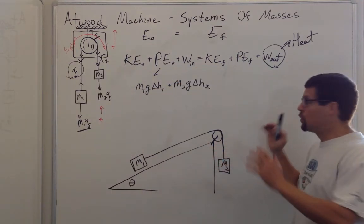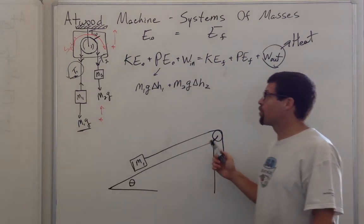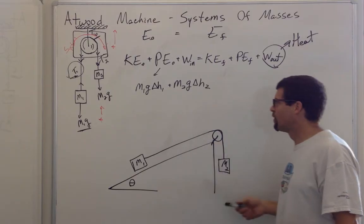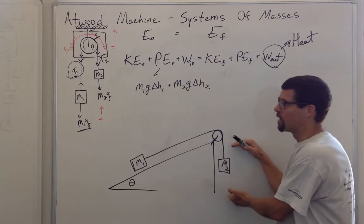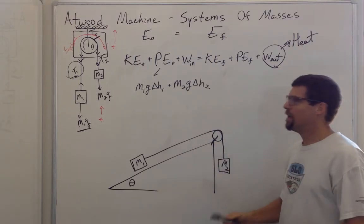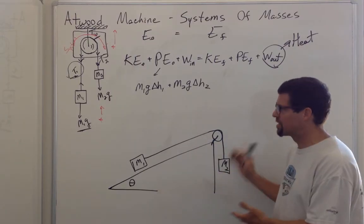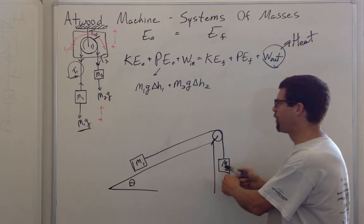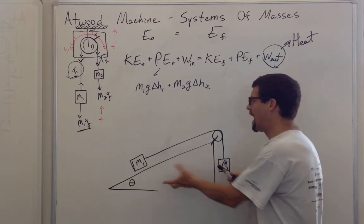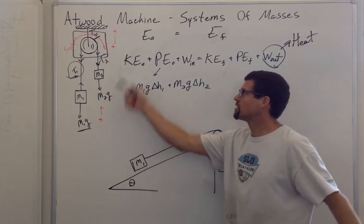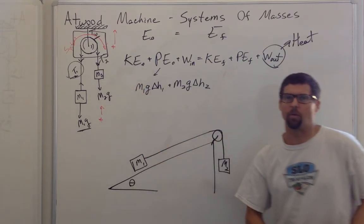Other than that, you can use the same protocol to find the final velocity if you follow distance, the average velocity, the amount of time, the acceleration, and the forces on these bodies and the tensions — just like we did with the Atwood machine.